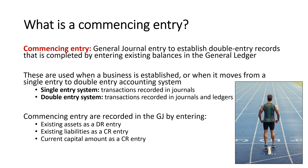A double entry accounting system, as the name suggests, means that it's recorded twice. So transactions and source documents are recorded in journals and in ledgers — and that's where we use the general ledger.